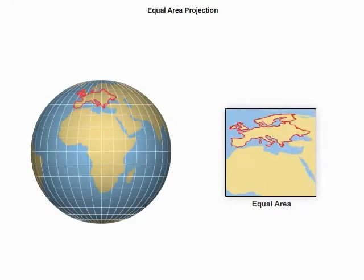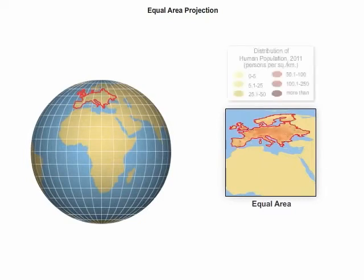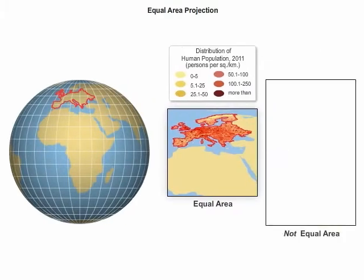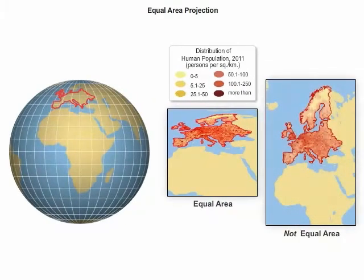Equal area map projections are typically used to study and compare the distribution of demographic characteristics such as population density or physical data such as rainfall amounts. Compare this map to a map projection that does not preserve area. You can see that equal area maps are useful for understanding population distribution.